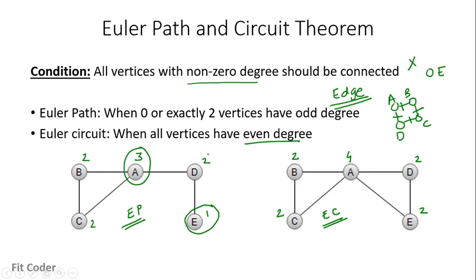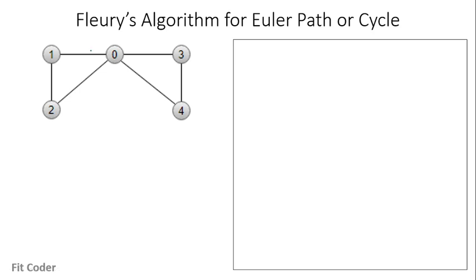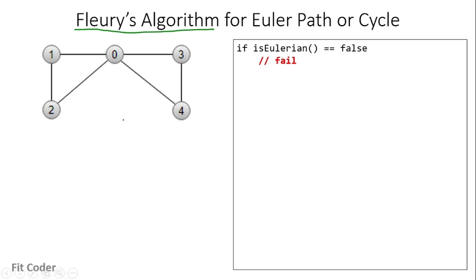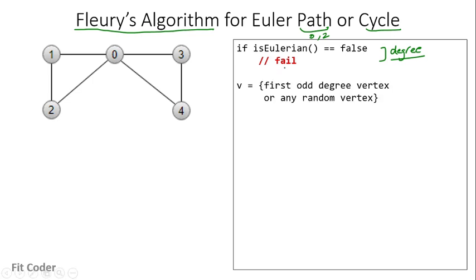But if we also want to print the actual Euler cycle or Euler path, there is an algorithm for that. That algorithm is known as Fleury's algorithm for finding the Euler path or Euler cycle. The first step is to check whether the graph contains an Euler path or Euler cycle by checking the degree of each vertex. If all vertices have even degree it has an Euler cycle; if there are 0 or 2 vertices with odd degree it is an Euler path. If neither condition is satisfied, the given graph is not Eulerian.